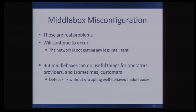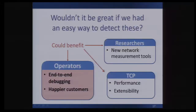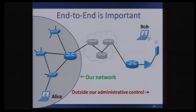We do recognize that middleboxes can and actually do a lot of useful things for operators, providers, and sometimes customers. So we really want to be able to detect and fix these issues without disrupting the more well-behaved middleboxes. Wouldn't it be great if we had an easy way to detect these? It could benefit researchers with new measurement tools, TCP in terms of performance and extensibility, and operators for better end-to-end debugging leading to happier customers. This end-to-end piece is pretty important because if the problem is somewhere outside of our administrative control, it can be much harder to debug and often requires cooperation from another endpoint.